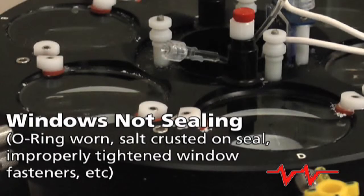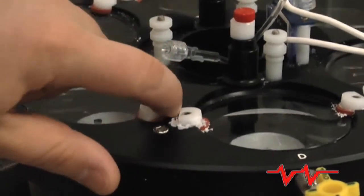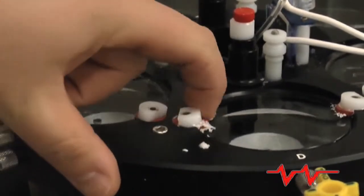If chamber windows are not sealing properly, air can get in. Examples leading to a bad window seal would be a worn O-ring, salt crusted on the seal, or improperly tightened window fasteners.